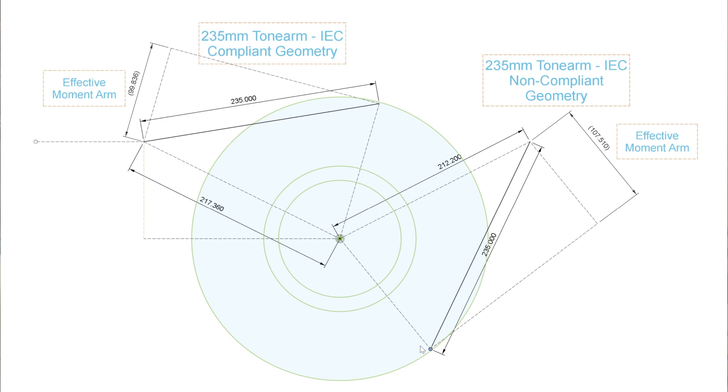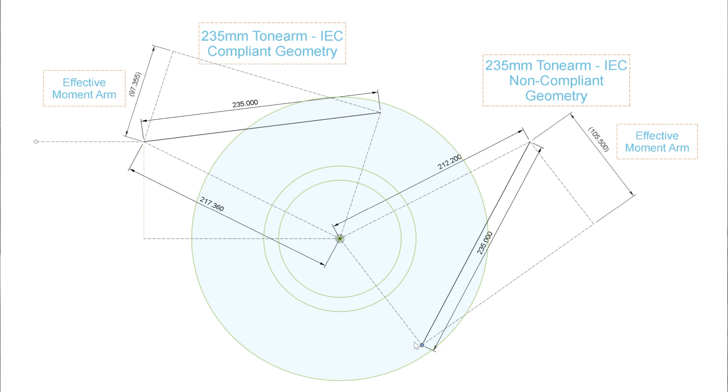So you see here when the arms are at the outermost area, they vary in their effective moment arm by about 8%. So meaning the non-compliant tone arm geometry is actually about 8% more powerful at this area of the record.